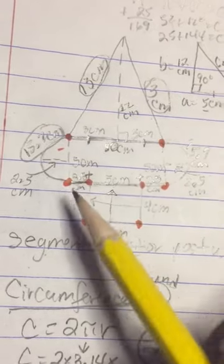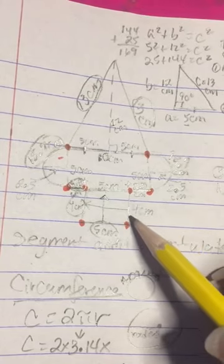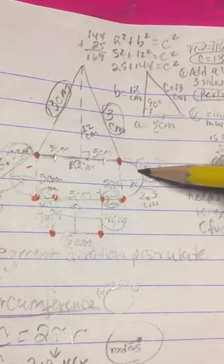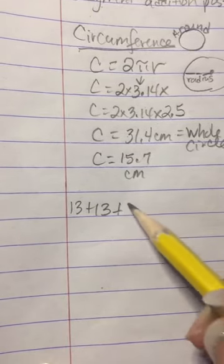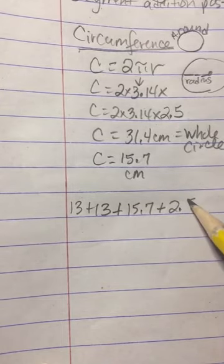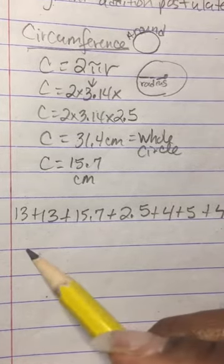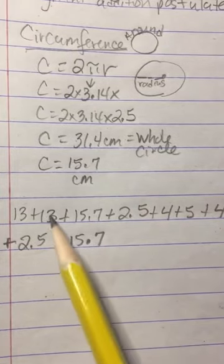Don't get confused with the lines on the inside — we're only looking for the outside numbers for perimeter. We have 15.7. From here to here is 2.5, here to here is 4, then 5, then 4, and this little piece is 2.5. From here to here is 15.7. So let's add all these numbers together.